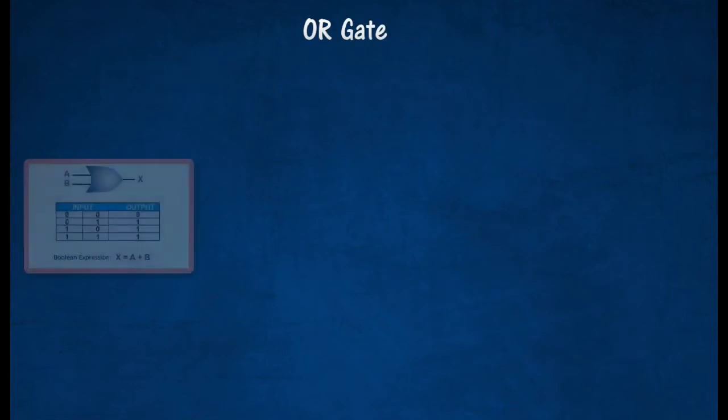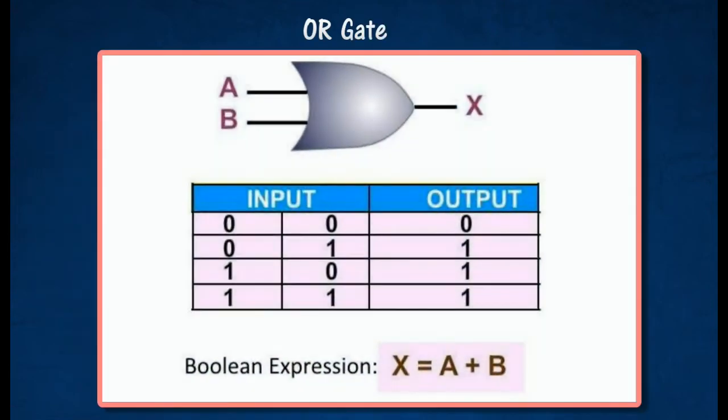The OR gate gets its name from the fact that it behaves after the fashion of the logical inclusive OR. The output is true if either or both of the inputs are true. If both inputs are false, then the output is false.